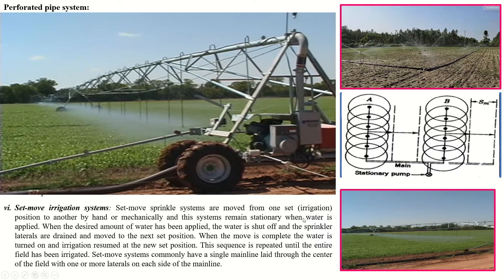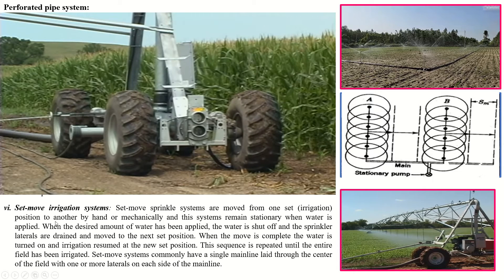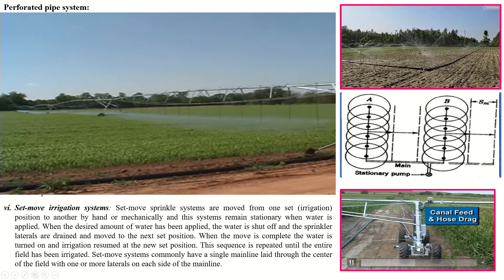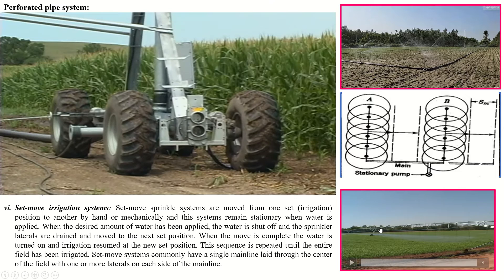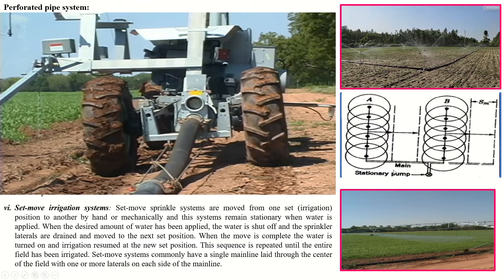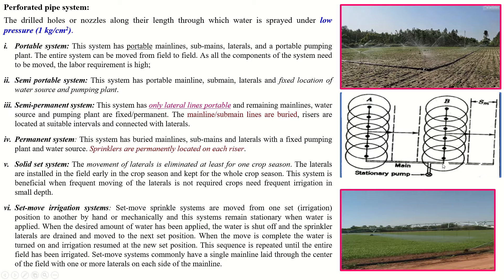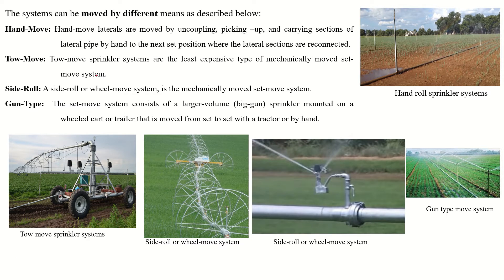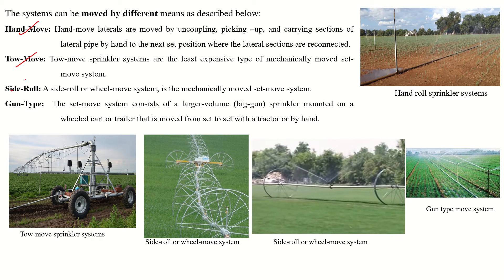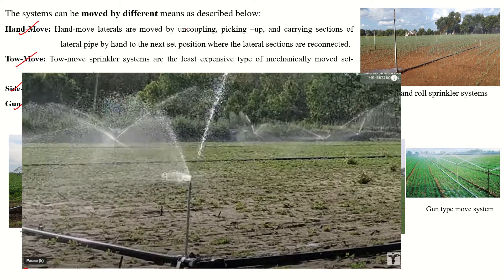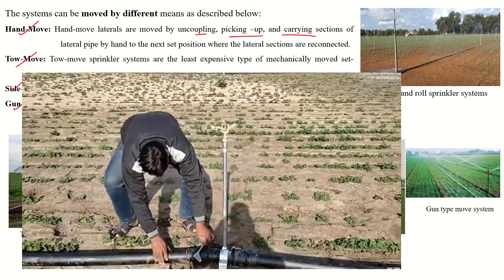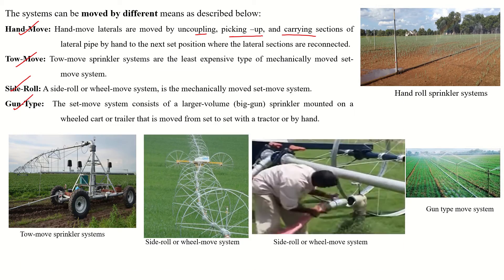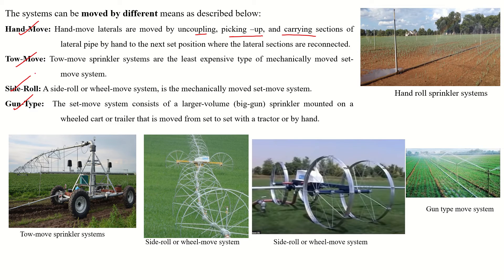The set move irrigation system is moved from one set of irrigation to another by machine or hand, as shown in this video. After completion of irrigation, all components are unloaded and moved to another location, and irrigation is started again. This type can be moved by different mechanisms: hand move, toy move, side roll, and gun. In hand move, the laterals are moved by uncoupling, picking up, and carrying sections of lateral by hand, dismantling individually and moving from place to place.